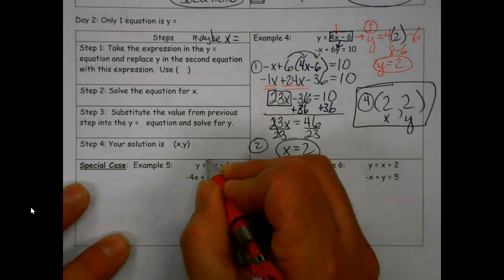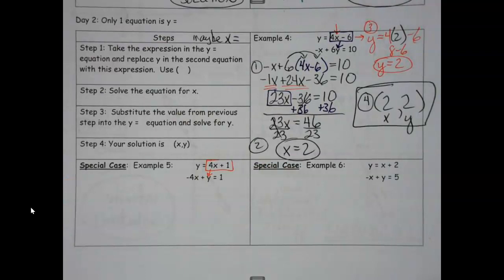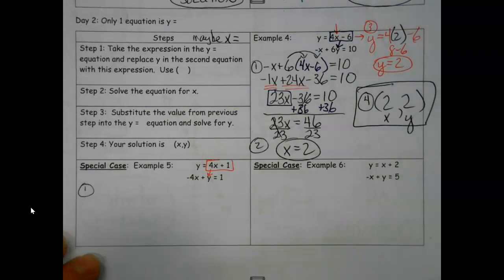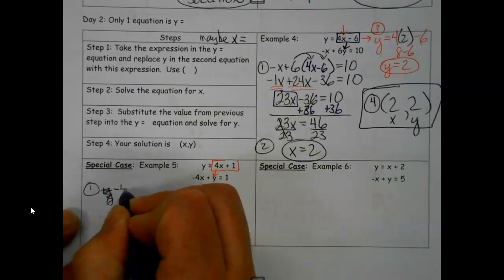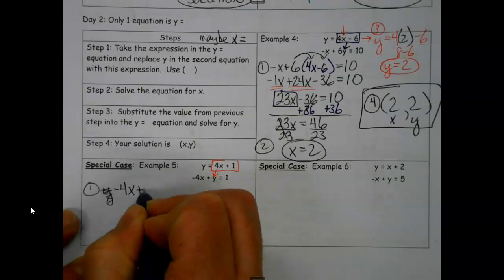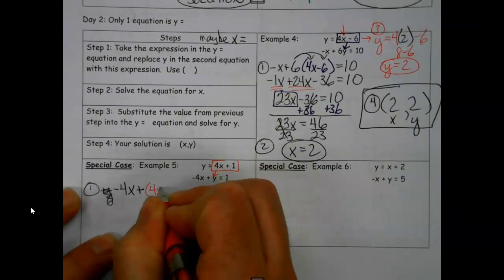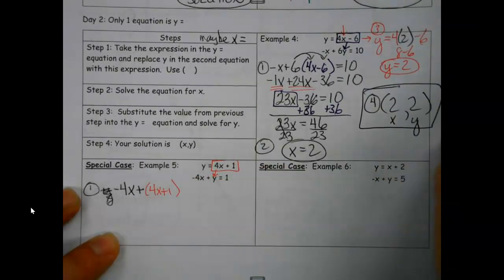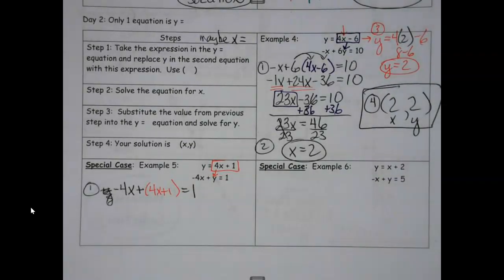So if I tackle this problem the same way though, I find my y equals, I'm going to plug it in. So I'm like, alright, step one. I started copying the wrong one. Negative 4x plus, here's my y.